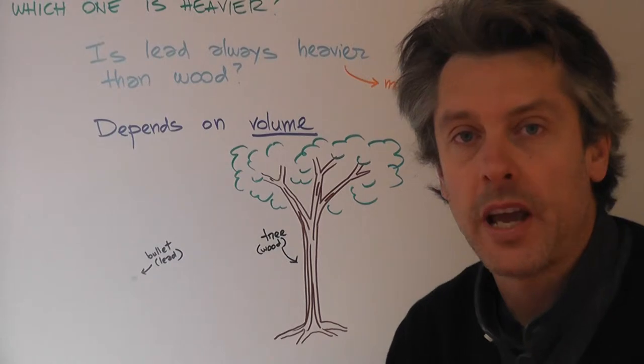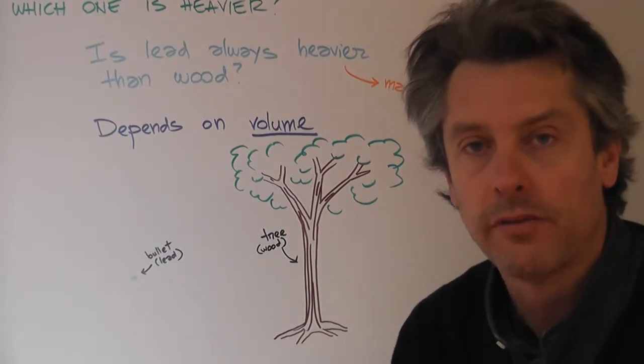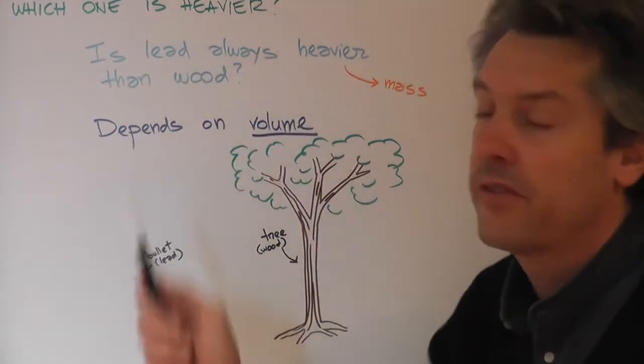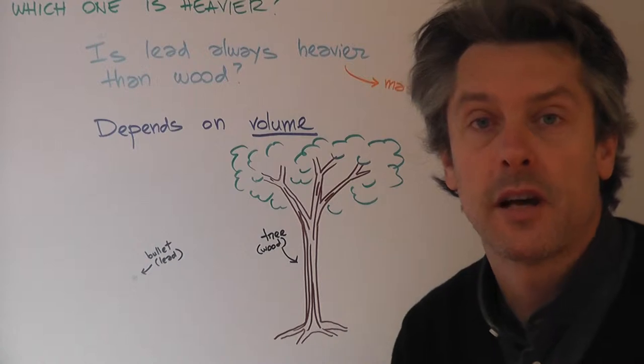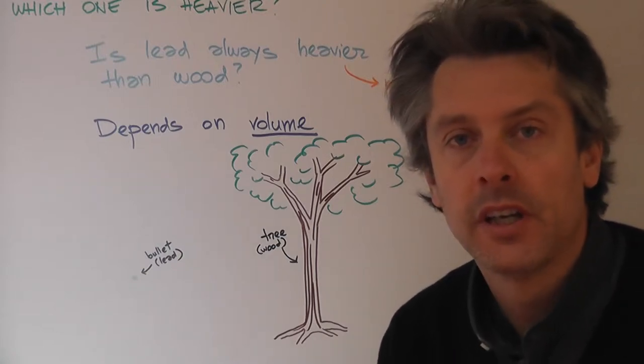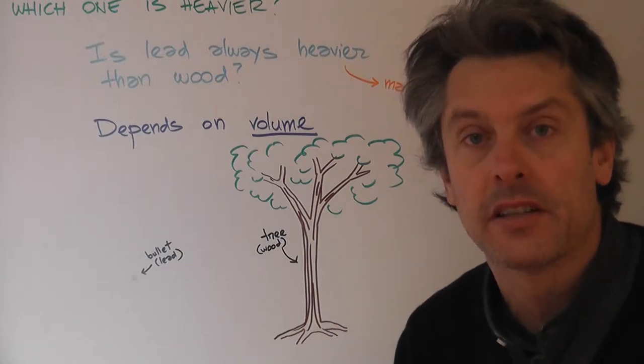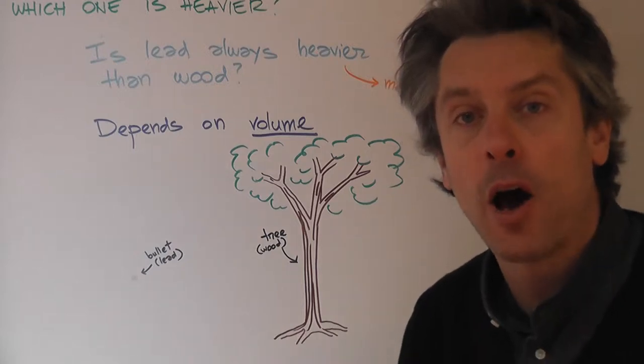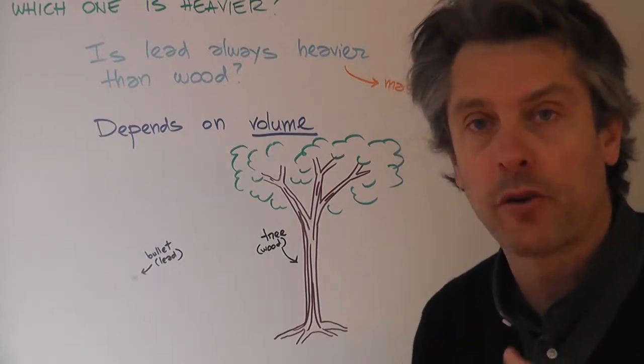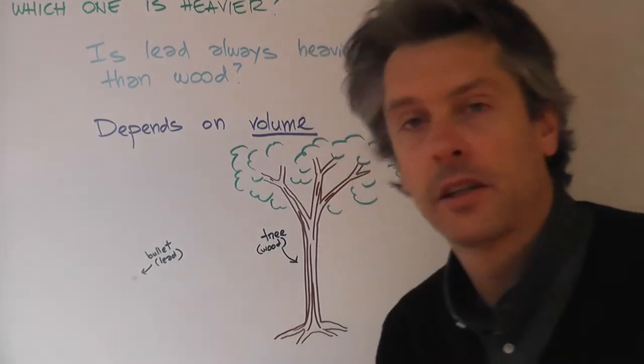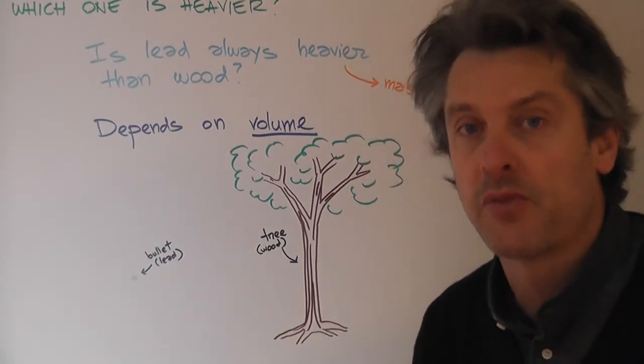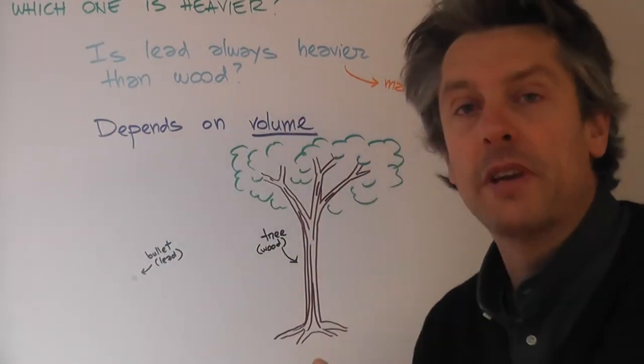In the previous lesson we defined the physical quantities of mass and volume, and today we're going to tackle a very common misconception summarized in this question: Is a piece of lead always heavier than a piece of wood? The answer is it depends on the amount of these two physical substances. If you take a small bullet made of lead and a very big tree which is mostly made of wood, it's pretty clear that the tree will be heavier than the bullet.